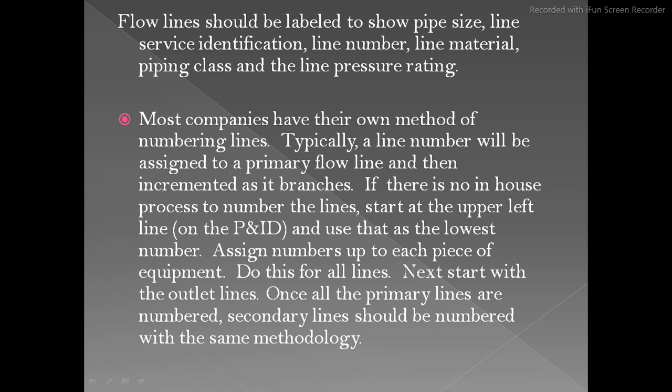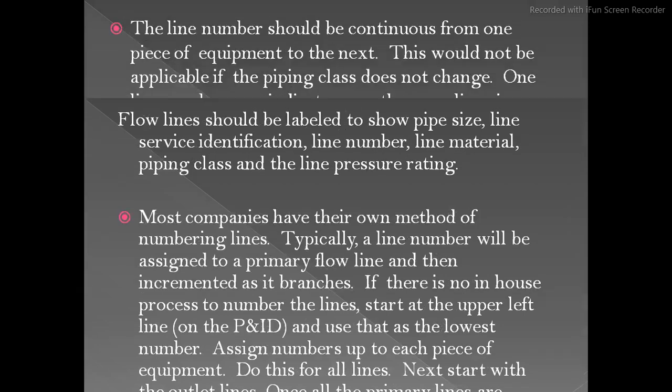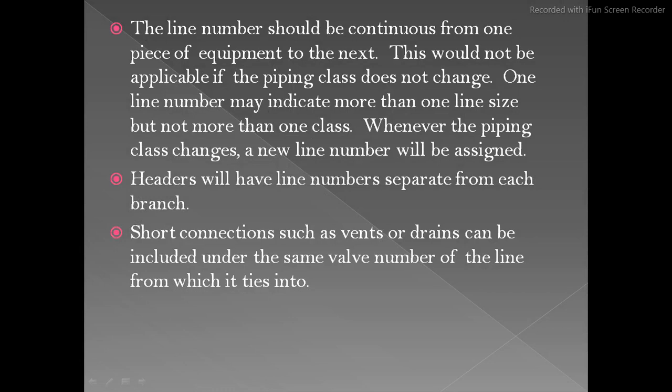Next, start with the outlet lines — meaning when they start with the equipment outlet. If you have a tank or a pump, whatever the outlet lines are, they start numbering there. Once all primary lines are numbered, secondary lines should be numbered with the same methodology. The line number should be continuous from one piece of equipment to the next.